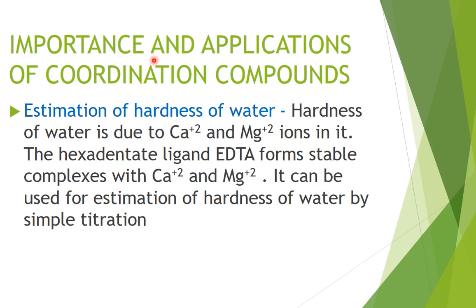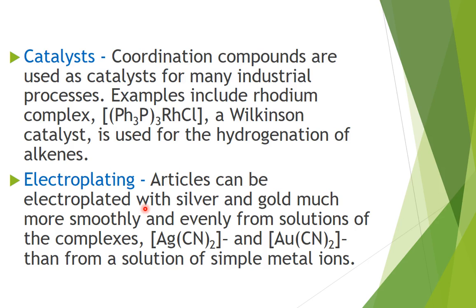Now the last topic of this chapter: importance and applications of coordination compounds. First is estimation of hard water. Hardness is due to the presence of calcium and magnesium ions. EDTA forms stable complexes with both of them, which can be estimated to calculate the hardness of water by titration. Coordination compounds are also used as catalysts in many industrial processes — for example, Wilkinson's catalyst, which is used for hydrogenation of alkenes.